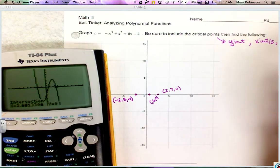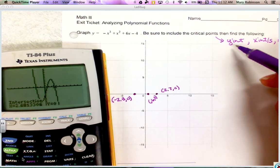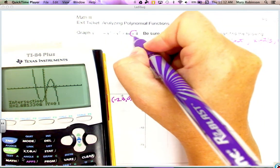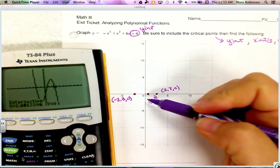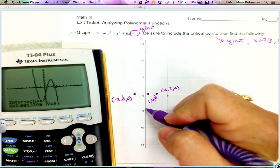That takes care of our x-intercepts, but we need our y-intercept. Remember that for any polynomial function, the constant term is your y-intercept. Since it is negative 4, on my y-axis I can go down and place a point at negative 4.